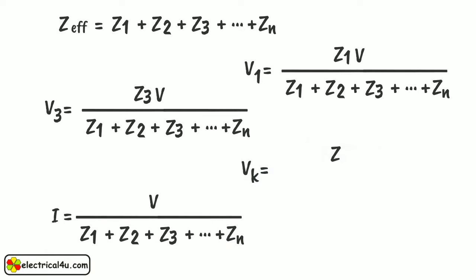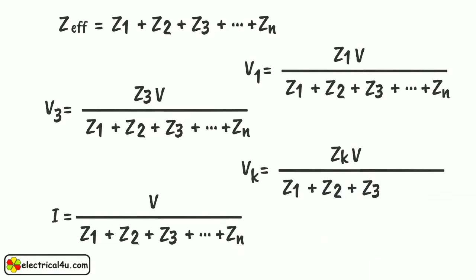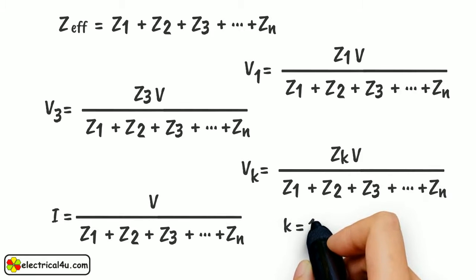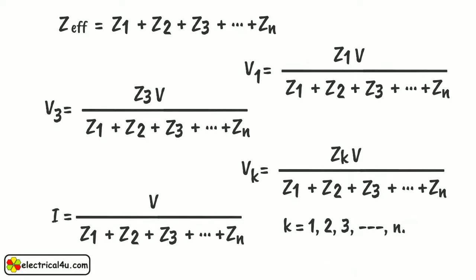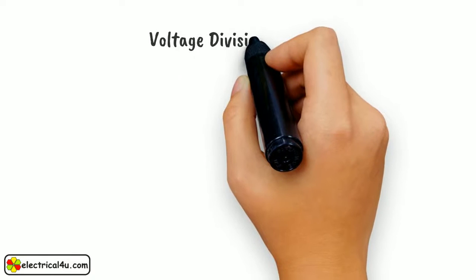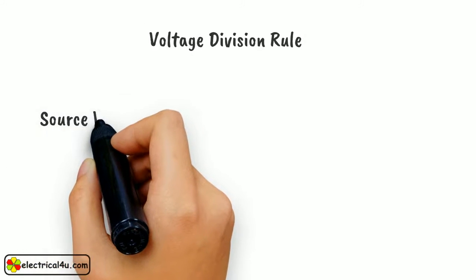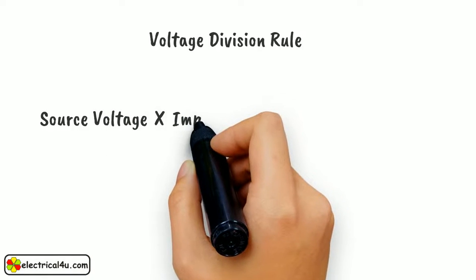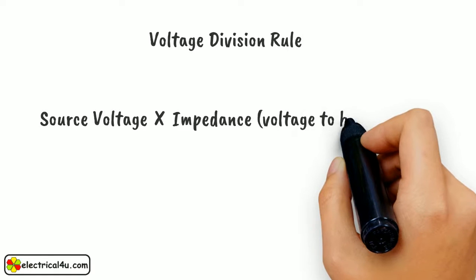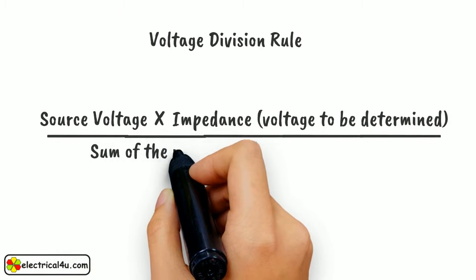In general, we can write Vk equals Zk into V divided by Z1 plus Z2 plus Z3 plus ... plus Zn, where K equals 1, 2, 3 up to n. This is called voltage division rule, and it is frequently used to determine the voltage across some impedances. In words: voltage across some impedance is source voltage into the impedance across which voltage is to be determined, divided by the sum of the impedances connected in series.